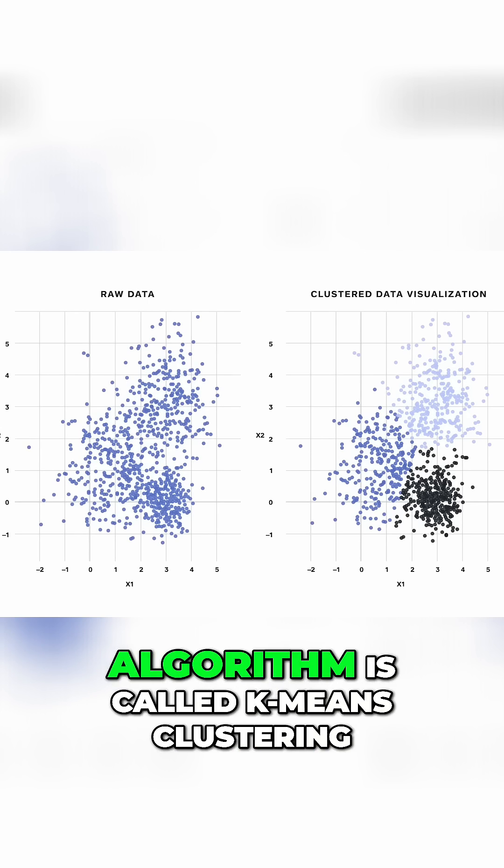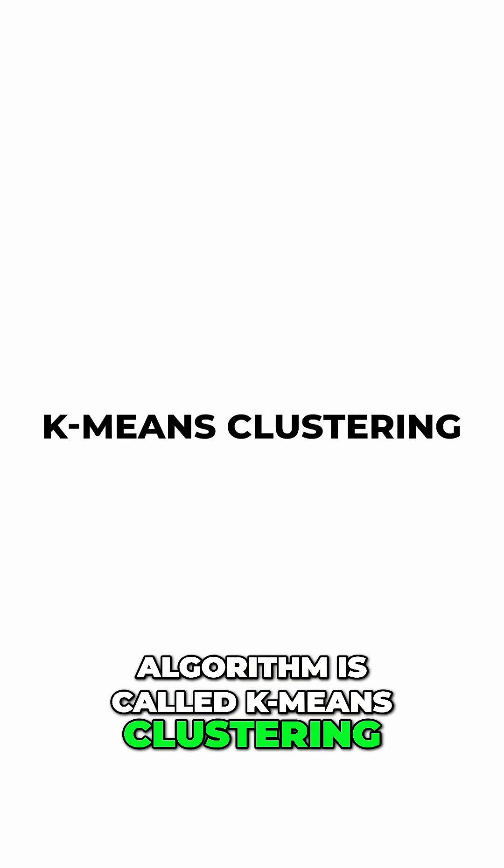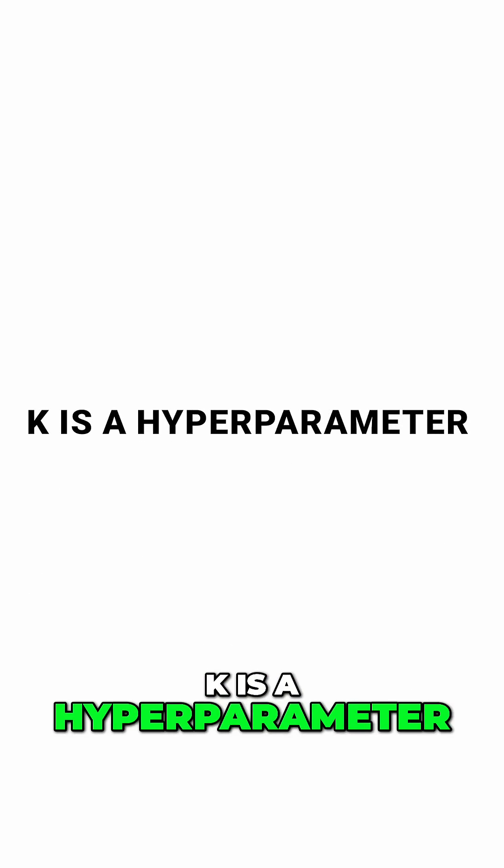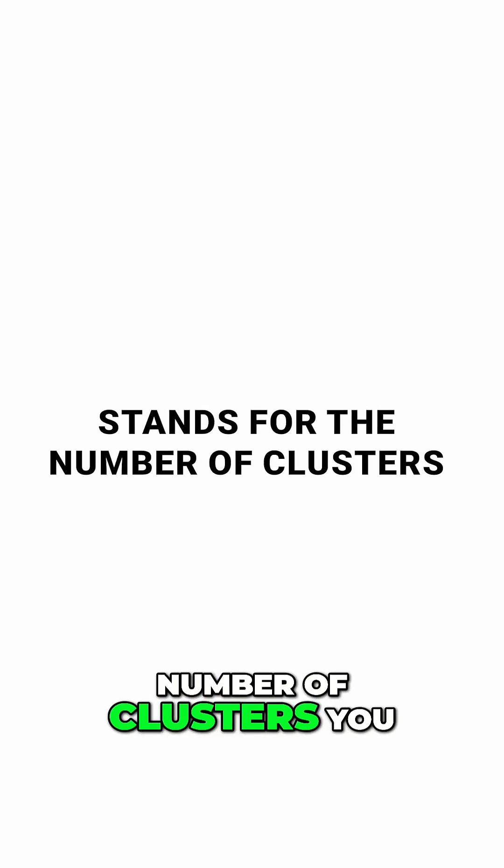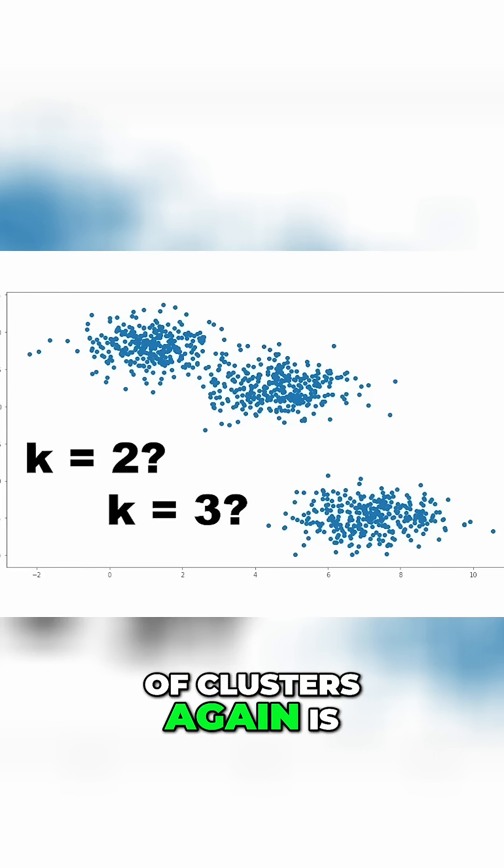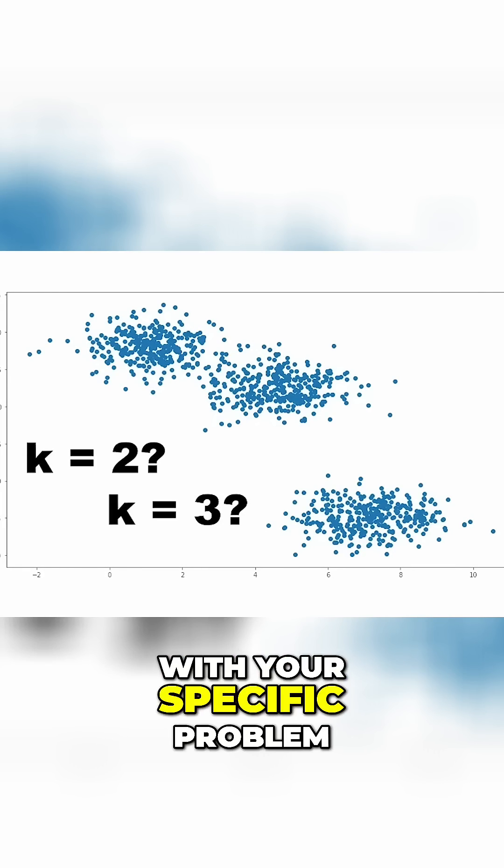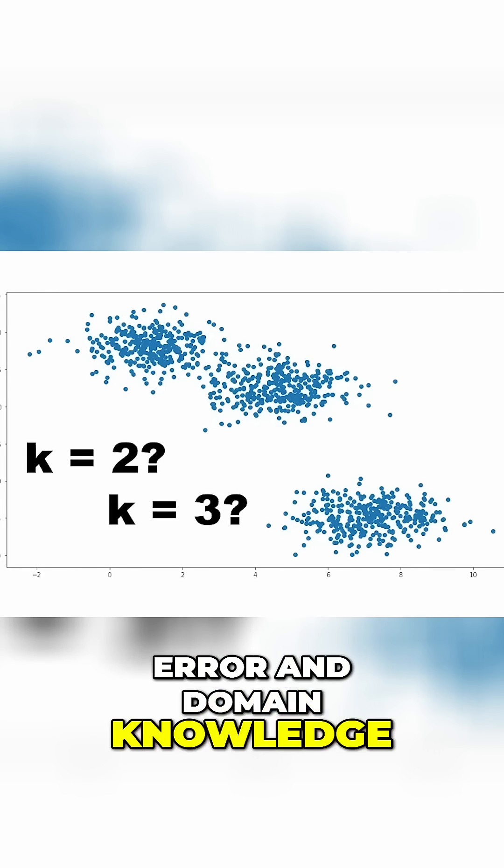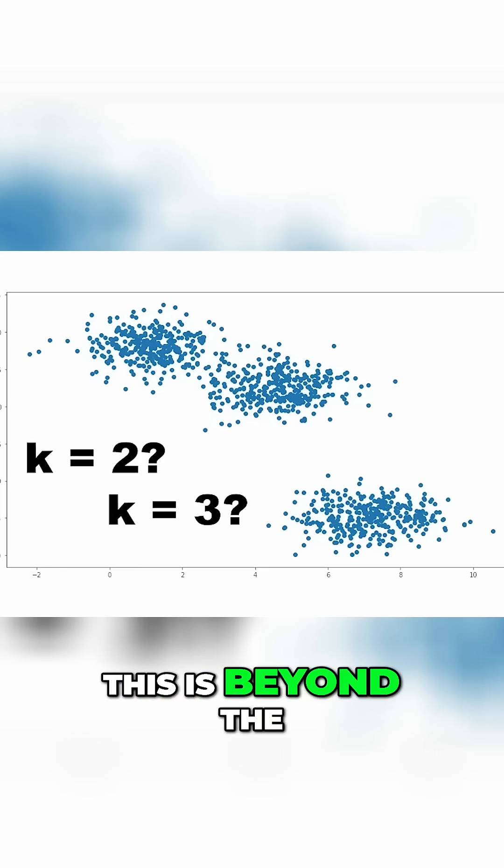The most famous clustering algorithm is called k-means clustering. Just like for KNN, k is a hyperparameter and stands for the number of clusters you are looking for. Finding the right number of clusters again is an art and has a lot to do with your specific problem, and some trial and error in domain knowledge might be required. This is beyond the scope of this video.